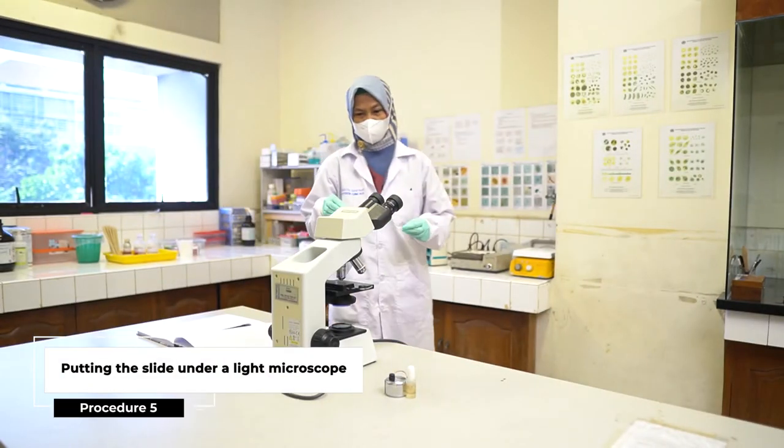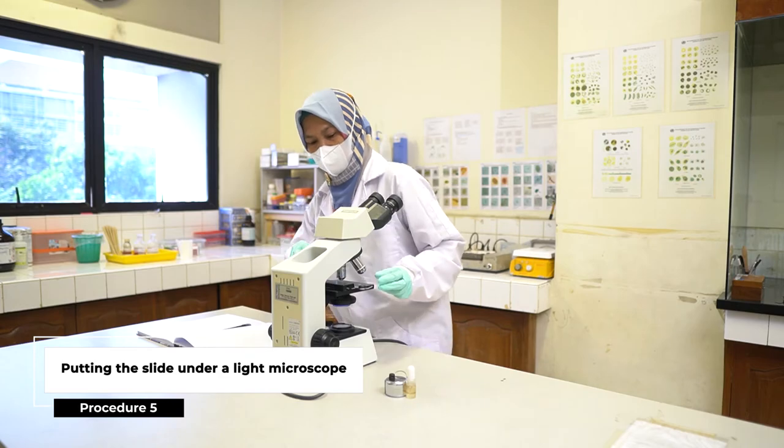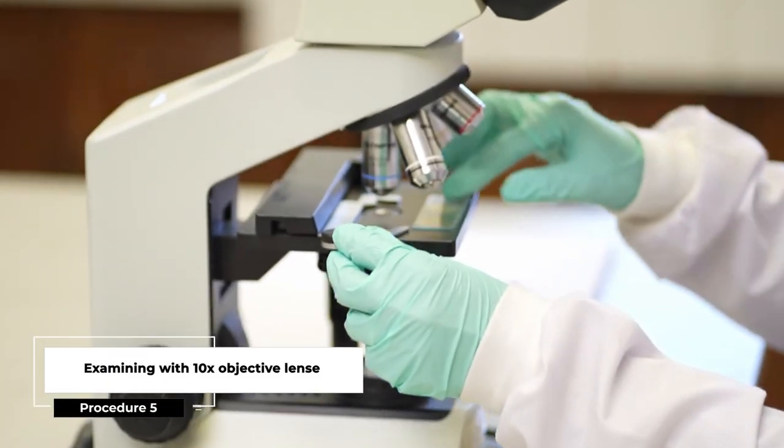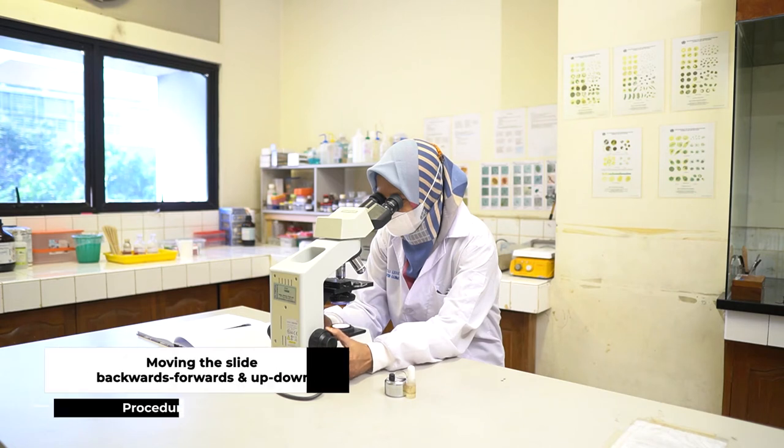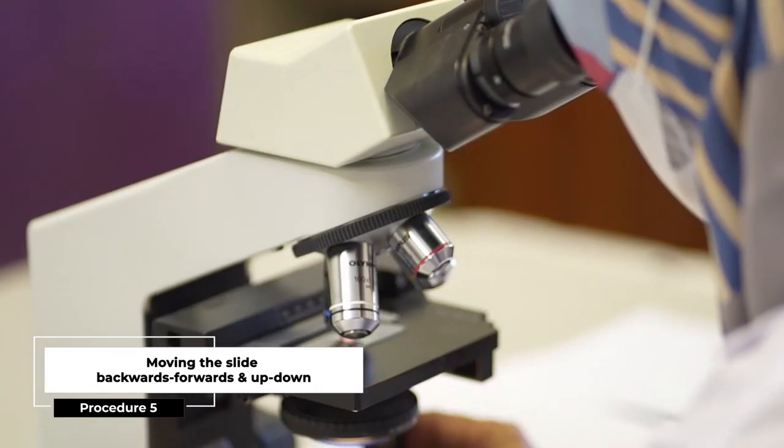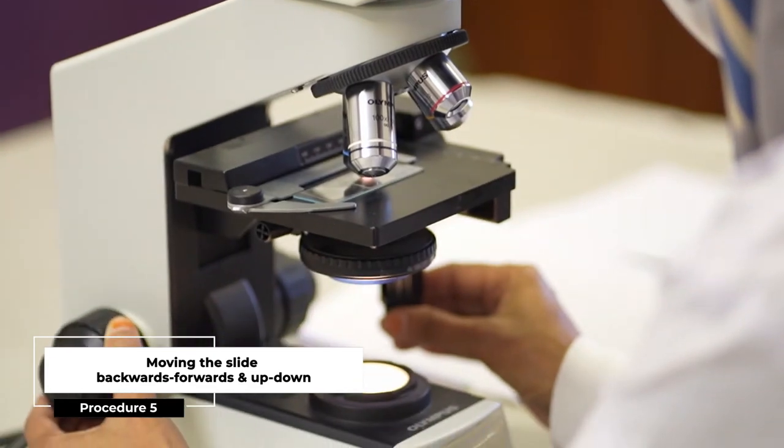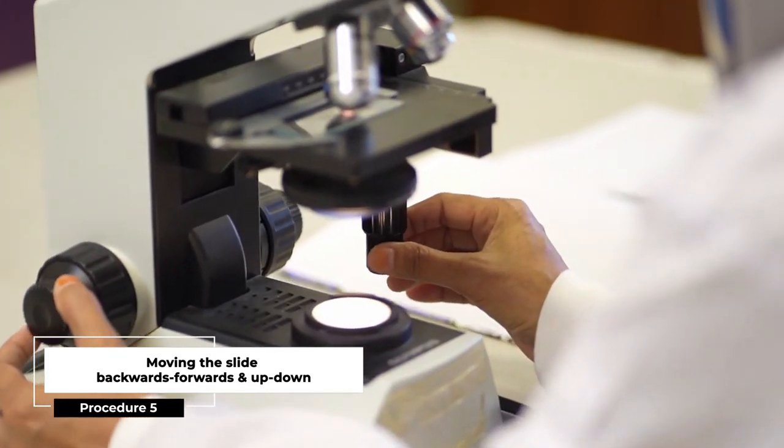Fifth, put the slide under a light microscope with 10 times objective. Examine the entire cover slip area by moving the slide systematically backwards and forwards or up and down.